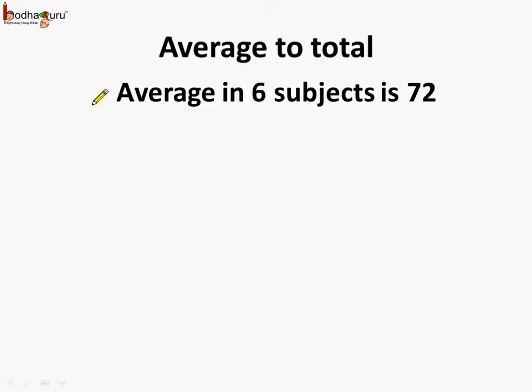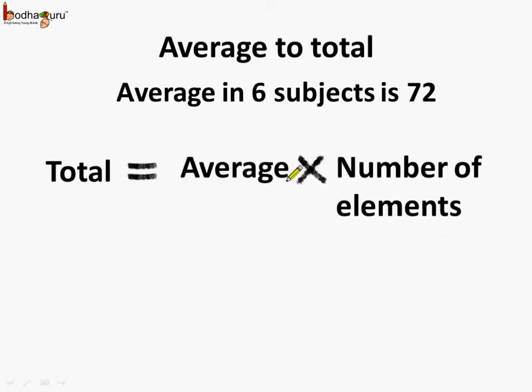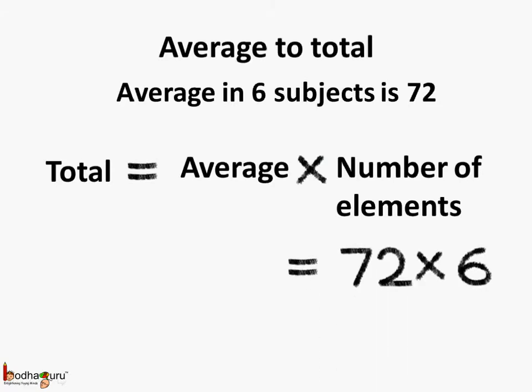So we know average in 6 subjects is 72. Now how to get the total? Total equals average multiplied by number of elements. Here the average is 72 and the number of elements is equal to 6, which is the total number of subjects which the student attempted.